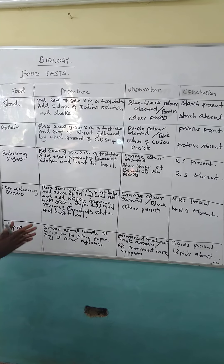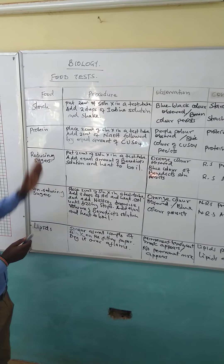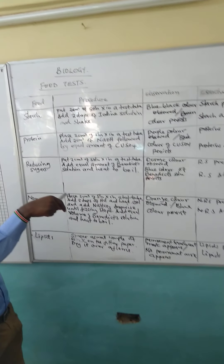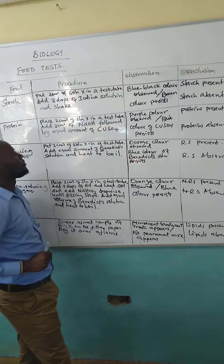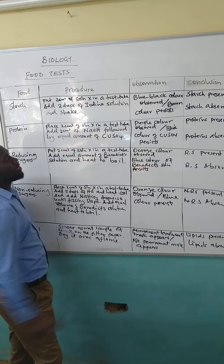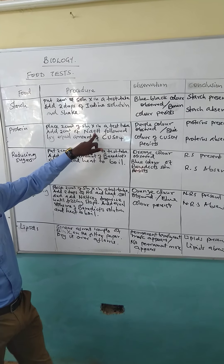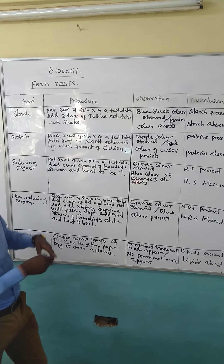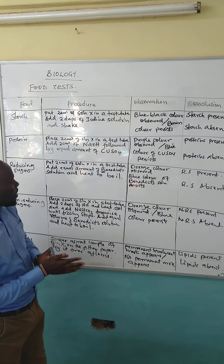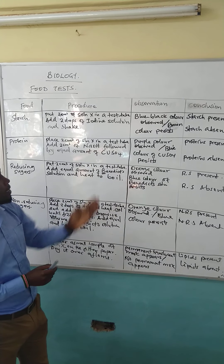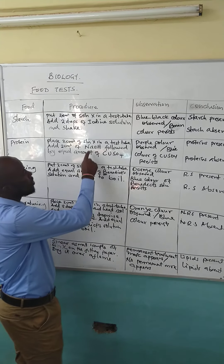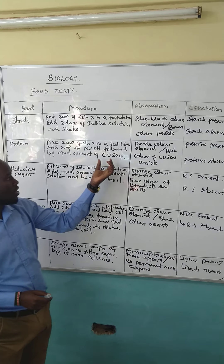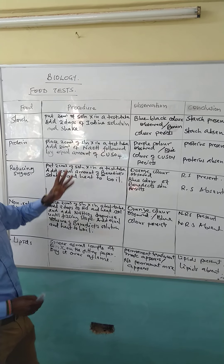Test for protein — what do we do? Place two cubic centimeters of the same solution that you have been given, solution X, in a test tube. Then add two cubic centimeters of sodium hydroxide. I would always advocate that when using this, write them in full, because should you fail to write the correct chemical formula, that part will be underlined and you will not get a mark for it. So sodium hydroxide, followed by equal amount of copper-2 sulfate. Only indicate the percentages if they have been indicated in the reagents provided.